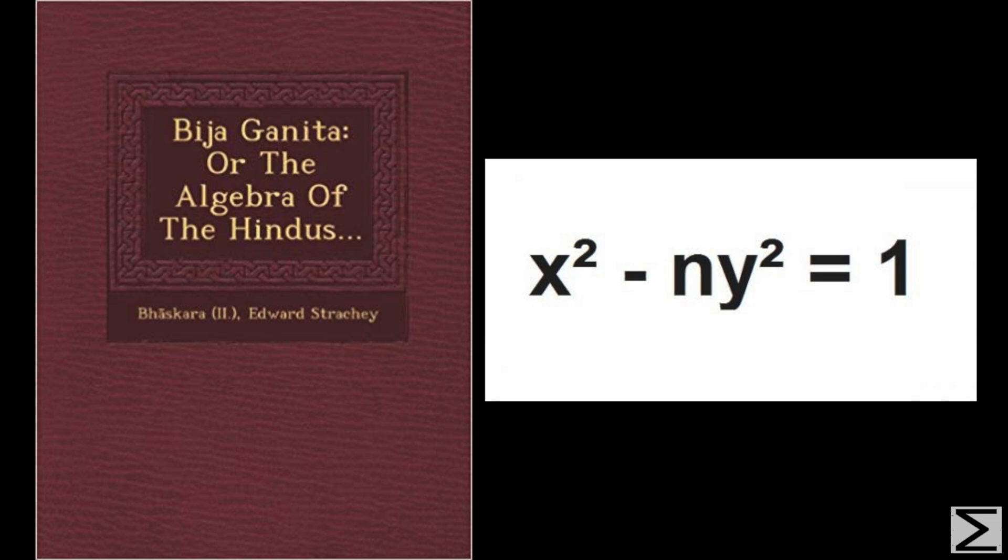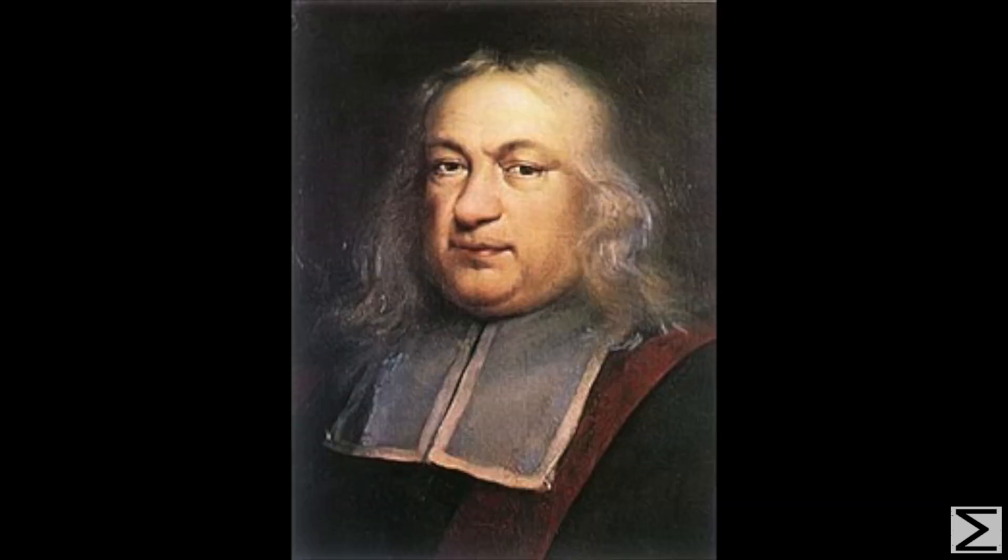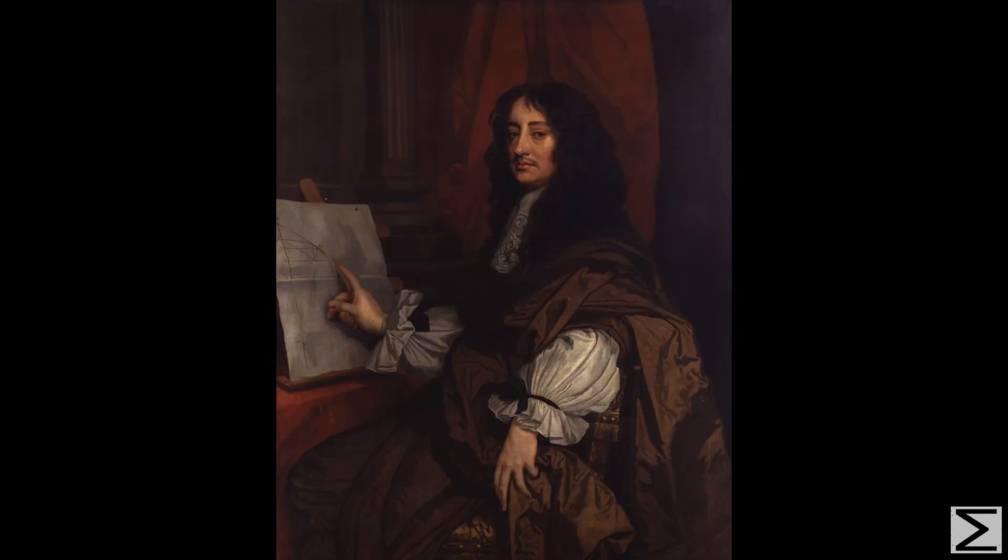He offered solutions for a variety of values of p including 61. Hundreds of years later Fermat posed the challenge using this equation with p valued at 61. It took mathematicians at the time years to solve it before it was eventually solved by Brunker in 1658. However, Brunker's method was far more complicated than Bhaskara's.